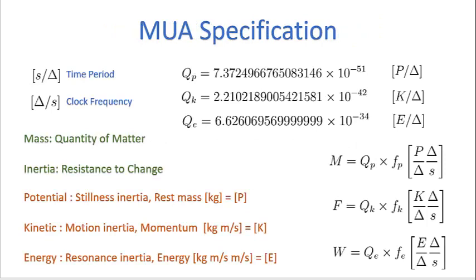Let's apply this modified unit analysis specification to the cesium atom. I'll show how to apply this to the cesium-133 atom used for atomic clocks in GPS systems and other systems requiring very accurate clocks. I start off by defining the time period with units of seconds per cycle. This cycle is very important — it's not just some arbitrary time; it is the time period of one cycle of electromagnetic energy of a certain frequency. The clock frequency has units of cycles per second — delta per second — which is the unit of frequency in modified unit analysis.